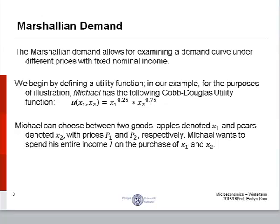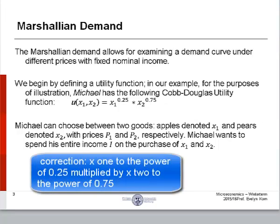The Marshallian demand allows for examining a demand curve under different prices with fixed nominal income. We begin by defining a utility function. In our example, for the purposes of illustration, Michael has the following Cobb-Douglas utility function. Utility is a function of x1 and x2, goods 1 and goods 2, equals x1 to the power of 0.25 and x2 to the power of 0.75.